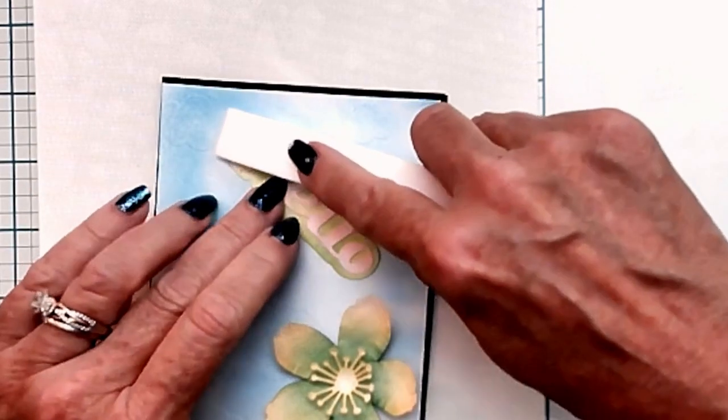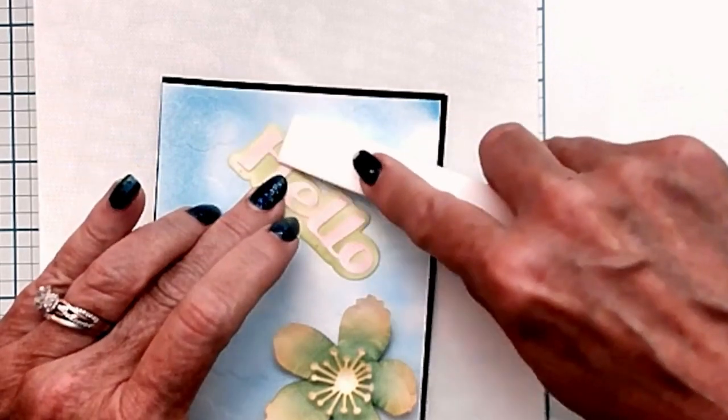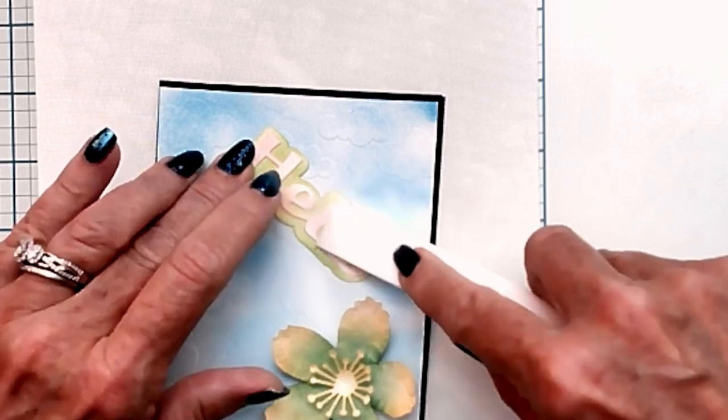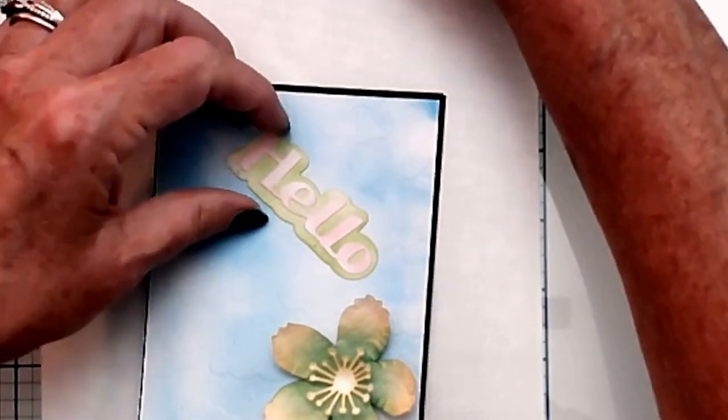We want to make sure that we burnish, I believe is the correct word, the hello down. If a little bit of glue comes out, it's fine because it dries clear. You can also get a wet towel, like a moist towel, and just wipe it off.